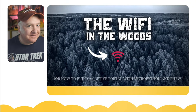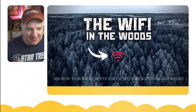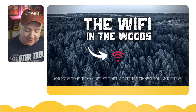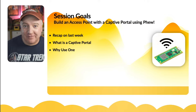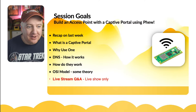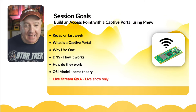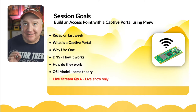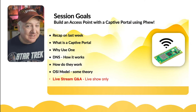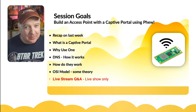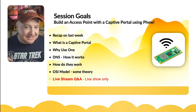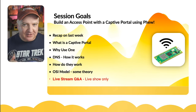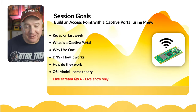I've mysteriously called this show 'The Wi-Fi in the Woods,' and I've subtitled it 'How to Build a Captive Portal with MicroPython and Phew.' We looked at Phew last week, so we'll do a recap of what we covered and what we didn't. This show is all about how to build this access point and captive portal. If you don't know what that means, we'll explain it, and it's ridiculously simple. We're going to look at what a captive portal is, why you'd want one, and we'll touch on DNS as well — the behind-the-scenes of how it all works.